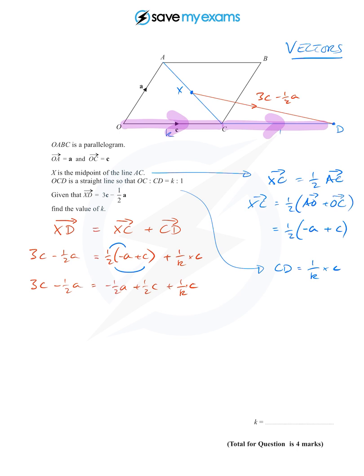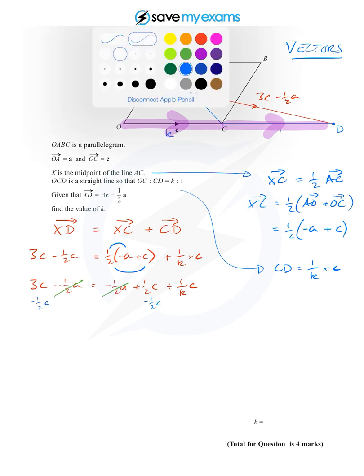Oh look, minus a half a on both sides, so we can cancel those or add a half a to both sides. Then we can try and get that thing with k in it on its own by subtracting the half c from this side. Let's subtract a half c from both sides.